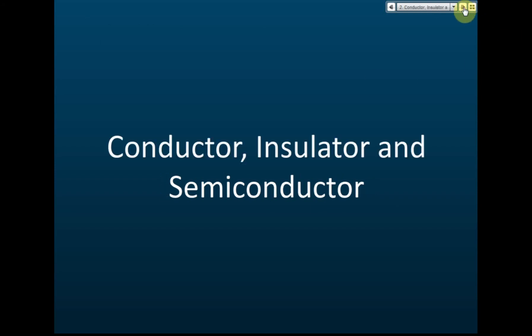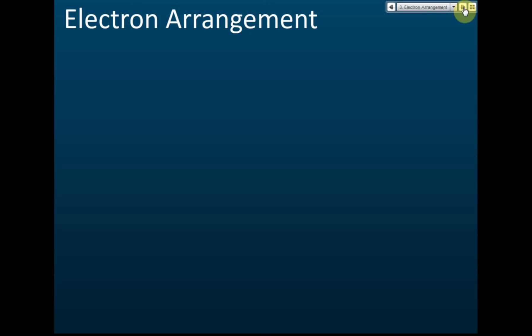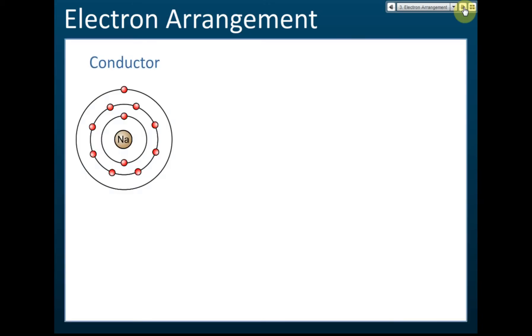Let's look at the electron arrangements of conductors, semiconductors, and insulators. A conductor usually has one, two, or three valence electrons. For example, sodium has one valence electron.